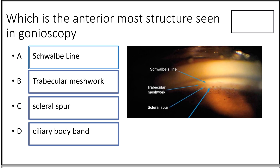Eighth question: which is the most anterior structure seen on gonioscopy — Schwalbe's line, trabecular meshwork, scleral spur, or ciliary body band? The answer is Schwalbe's line, which is the most anterior structure.